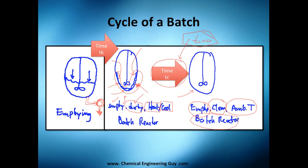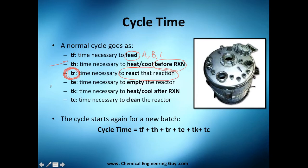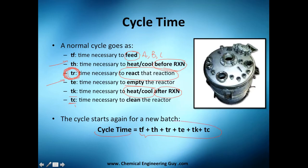Our cycle is set for another batch. To summarize: TF is the time necessary to feed A and B; TH is the time needed to heat before the reaction; TR is the time needed to react — the one we calculate in reactor engineering; TE is the time necessary to empty; TK is the time to cool or heat again after the reaction; and TC is the time needed to clean the reactor. The cycle time is simply the addition of all these times — no heavy math, just addition.